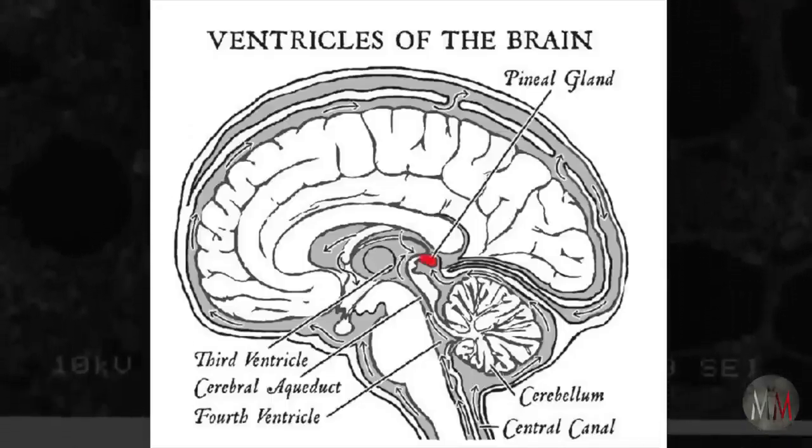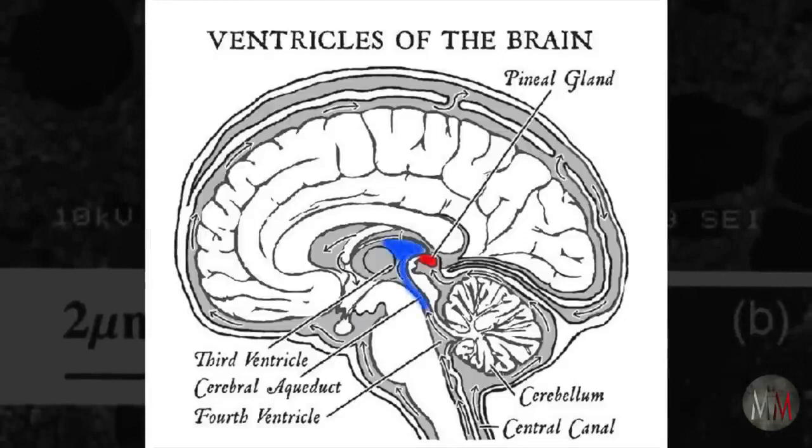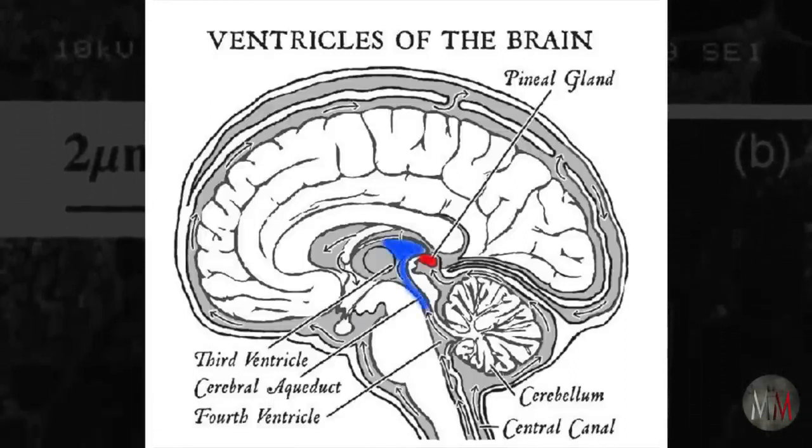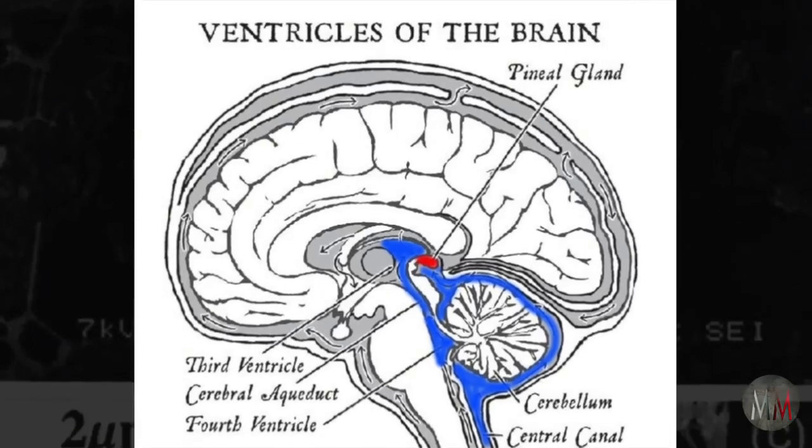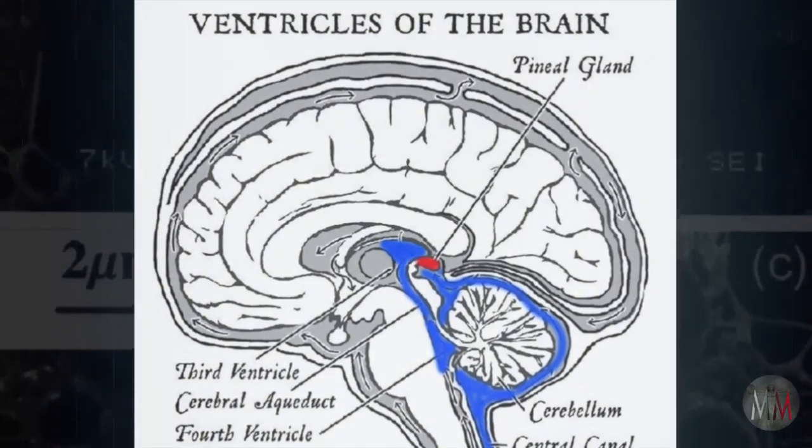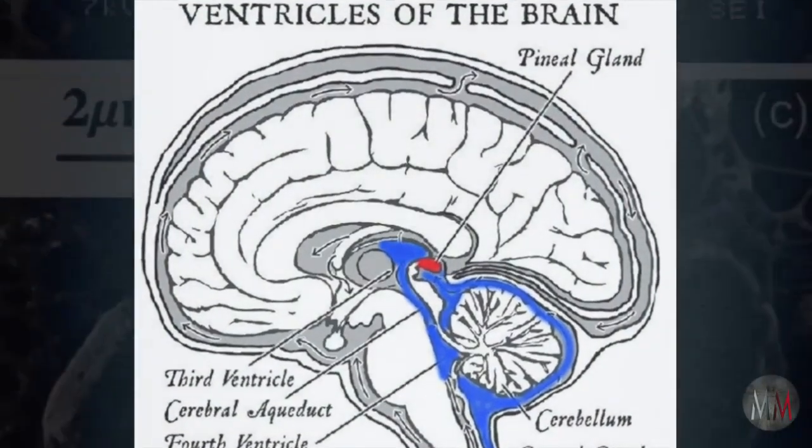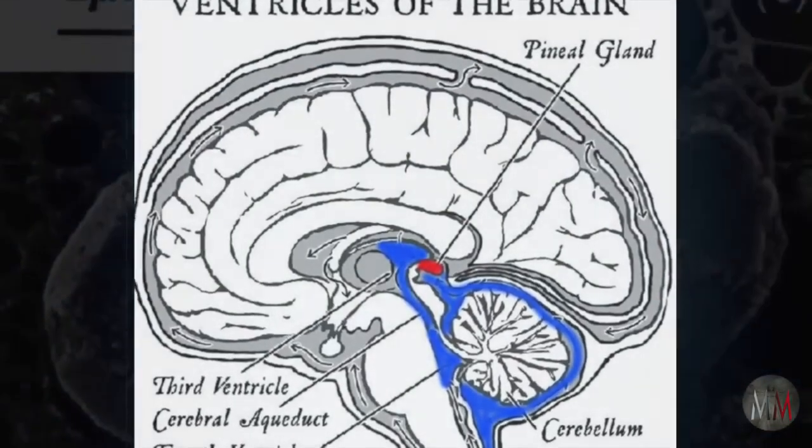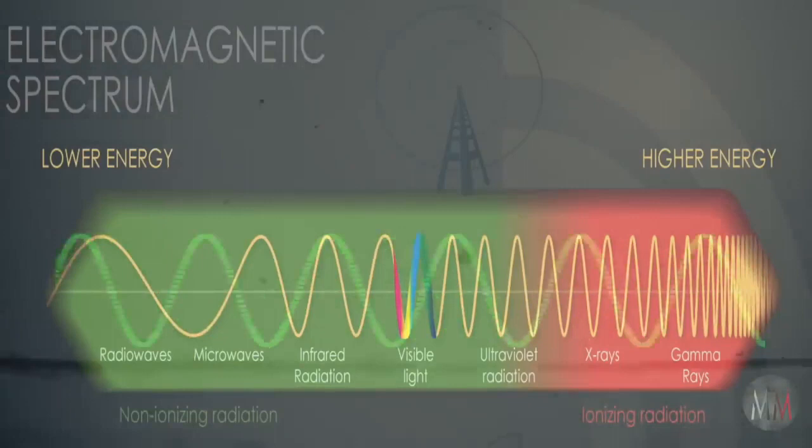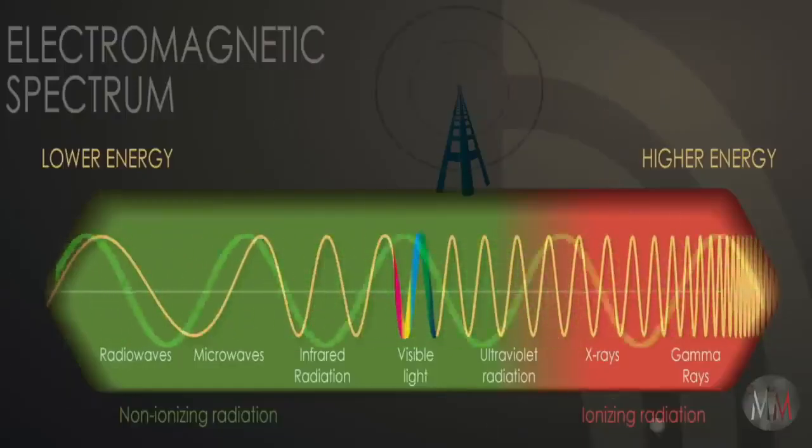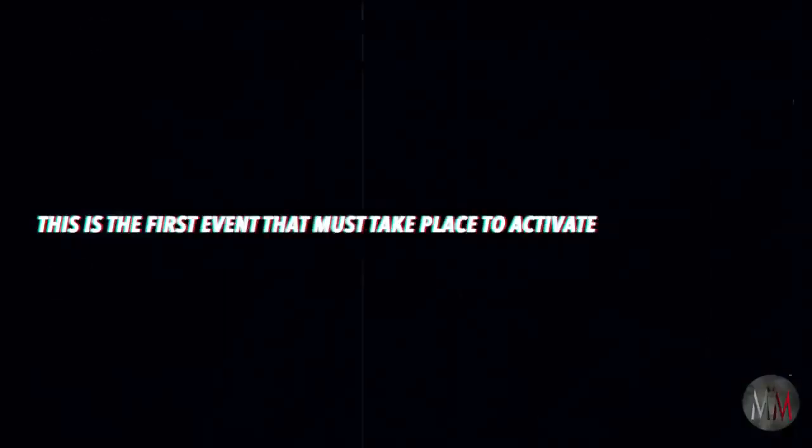By increasing the intrathecal pressure, you funnel a greater volume of fluid into the chamber of the third ventricle as well as from the space around the cerebellum. When you hold your breath and squeeze, this extra volume of fluid exerts pressure from both directions up against the crystals, causing them to compress and create the piezoelectric effect. Now the pineal gland becomes a pulsating antenna capable of picking up subtler and faster electromagnetic frequencies. This is the first event that must take place to activate the pineal gland.